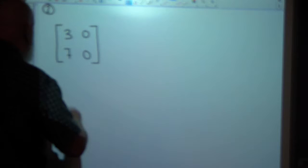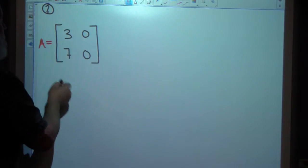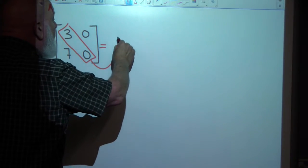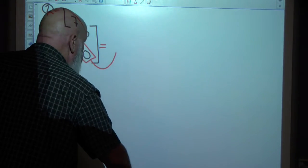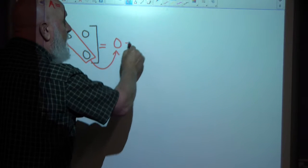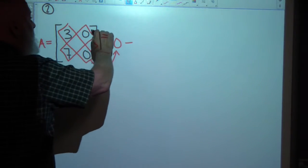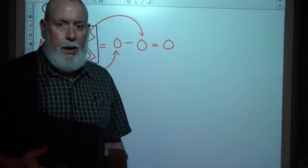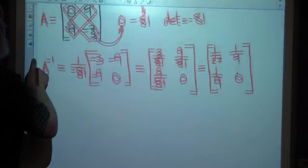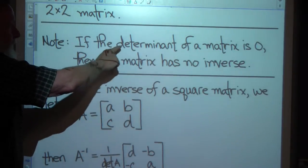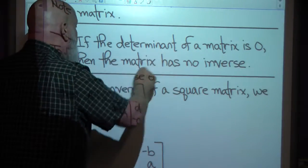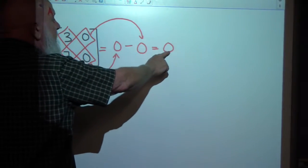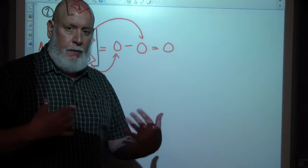Looking at this second matrix A, the first thing we want to do is find the determinant. Multiplying these two together gives me 0, minus multiplying these two together which also gives me 0. So 0 minus 0 is 0 — my determinant is 0. Since the determinant is 0, the matrix has no inverse; it's said to be singular. We cannot find the inverse of this matrix.